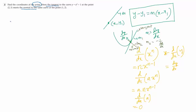The tangent is drawn to a curve, and the equation of a tangent is the equation of any line. This is a quadratic curve, so we can have a parabola here. The tangent is drawn at the point (2, 5), so the point where the tangent is drawn is (2, 5), and our task is to find the equation of this tangent.